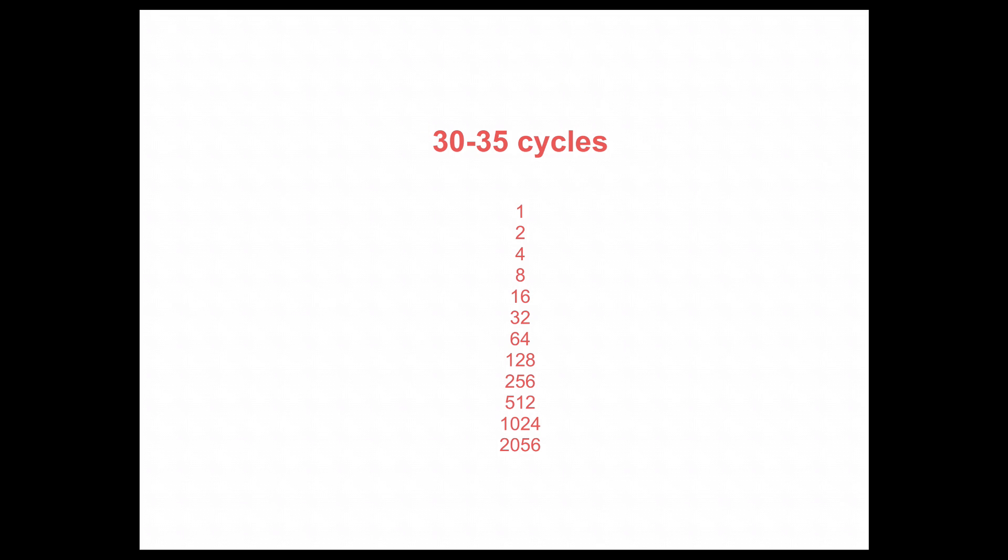Essentially, we go through that cycle 30 to 35 times. As you can see from what we did, we got two copies of our initial copy from one cycle, but you can identify with these numbers that every time you go through it we double each time. So after 30 to 35 cycles, you would have amplified millions of copies of that target region in a very short space of time.